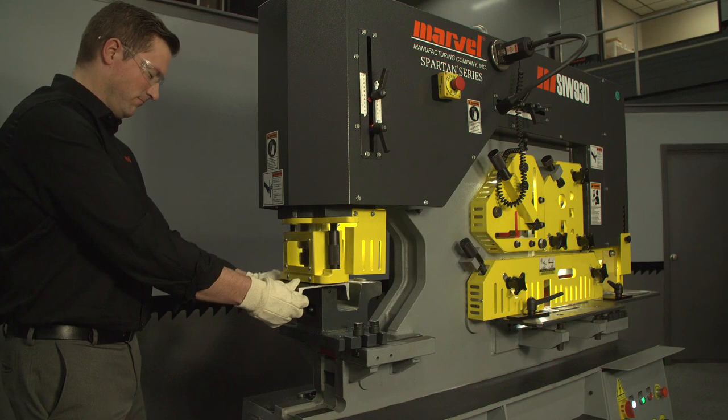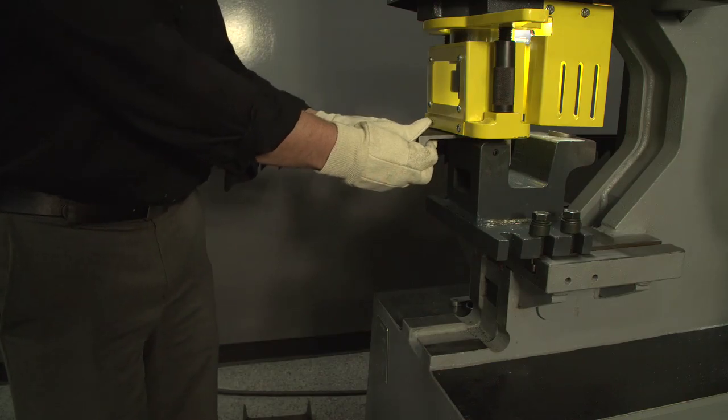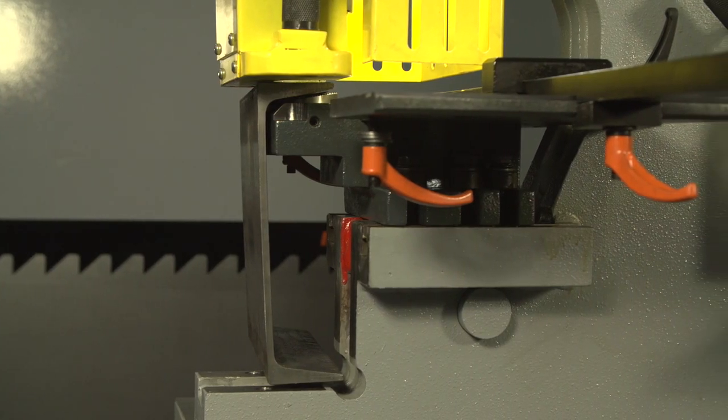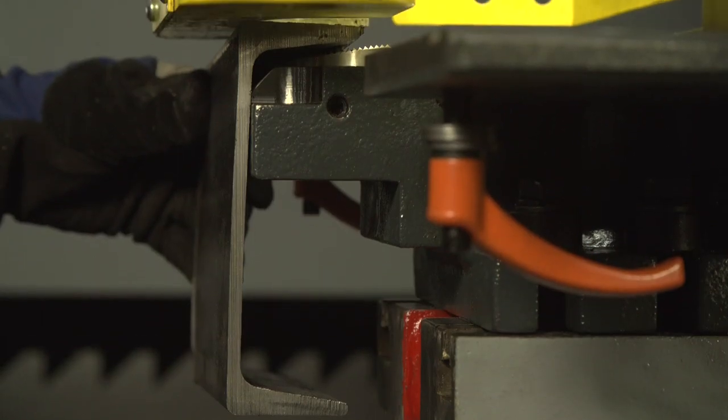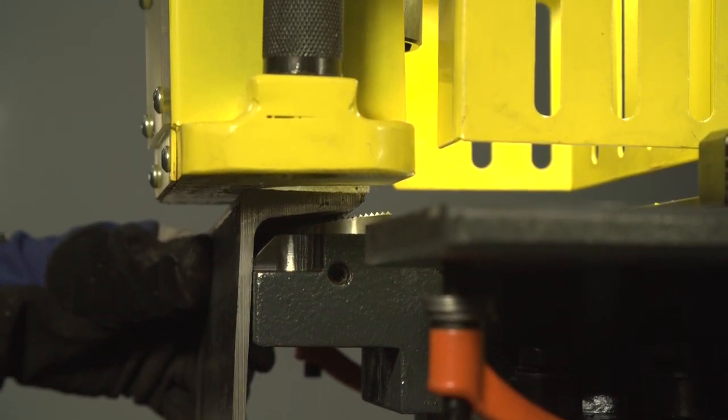The structural die block allows for the punching of a C-channel leg with the optional die not shown. The lower T-slot table can be removed to allow for punching larger angle iron or C-channel. See owner's manual for tonnage restrictions.